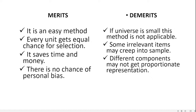The lottery method is a very easy method where every unit gets equal chance of selection and it saves time and money. There is no chance of personal bias. However, if the universe is small, this method is not applicable. Another demerit is that some irrelevant items may creep into the sample, and different components may not get proportionate representation.